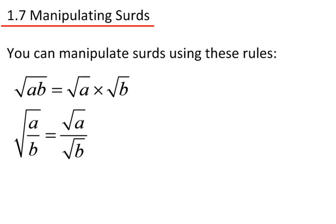Manipulating surds. You can manipulate surds using the following rules: the square root of AB equals the square root of A times the square root of B. The square root of A divided by B equals the square root of A divided by the square root of B.